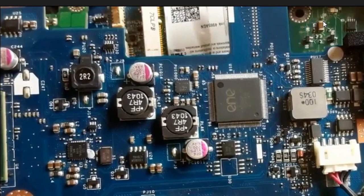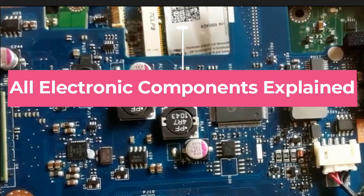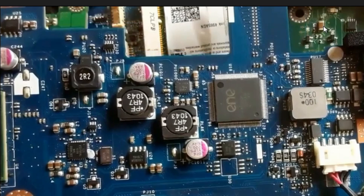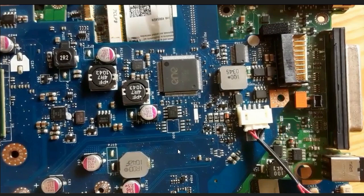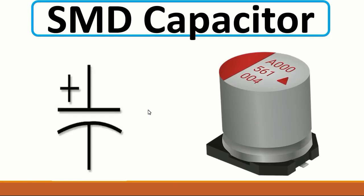Hi everyone, in this video I'm going to teach you all electronic component names, symbols, and pictures. Let's get started. Let's begin with the SMD resistor. As you can see, this is the resistor, and here we have the symbol for the resistor. As you can see here on the motherboard, we have SMD resistors.